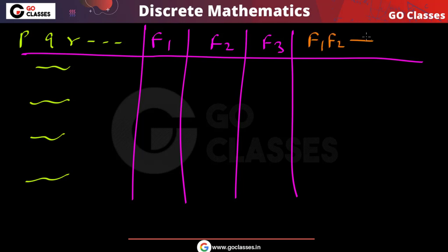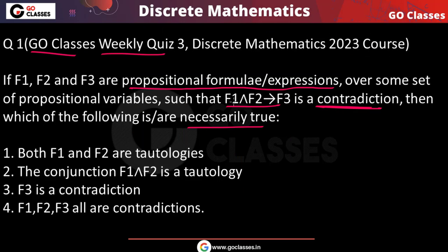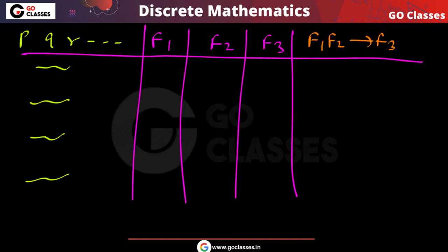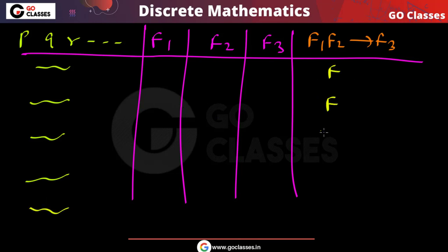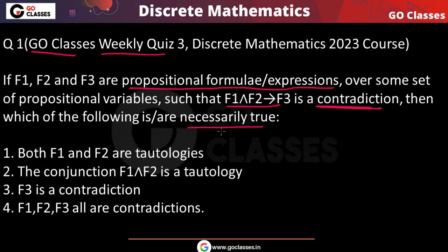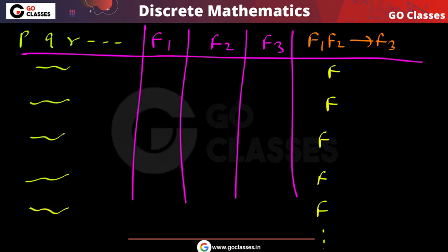The question says that f1 ∧ f2 → f3 is a contradiction. This means for every row in the truth table, f1 ∧ f2 → f3 is false — false in every single row.